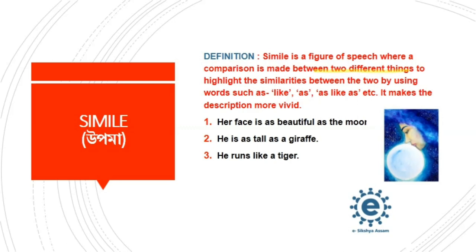So, simile and metaphor — first of all, these are poetic devices. In Assamese, simile means 'upoma' and metaphor means 'rupok'. The only aim to use these two figures of speech is to make our expression more vivid and interesting.